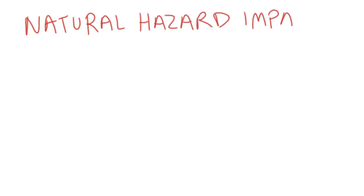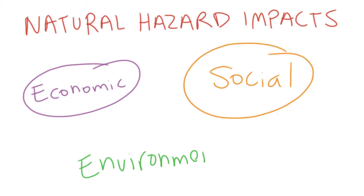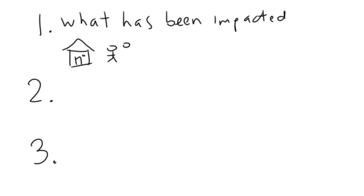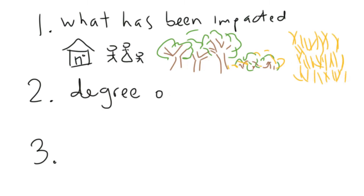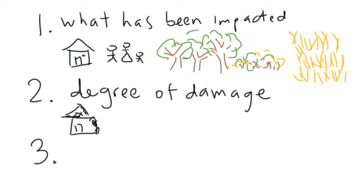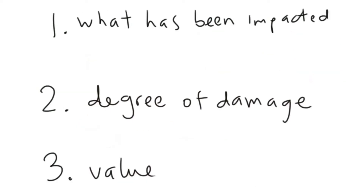Assessing a wide range of hazard impacts is important in order to capture the full picture of losses — economic, social and environmental. In order to estimate losses caused by natural hazards, we need to know three things. First, what has been impacted? What are the things in the landscape that have been affected by the hazard, either directly or indirectly? Second, what is the degree of damage to the things that have been impacted — is it complete damage or is it partial damage? And third, what is the value of those things that have been impacted so that we can estimate the value that was lost? Now let's have a look at these three things in more detail.